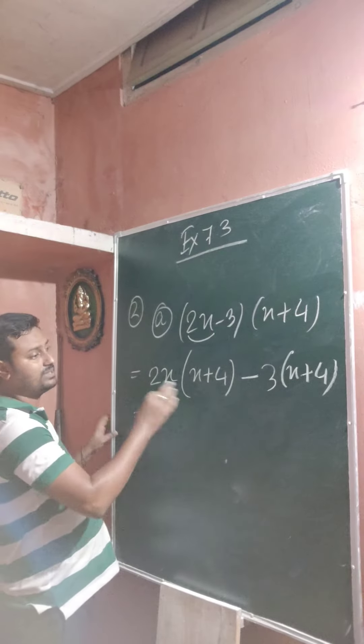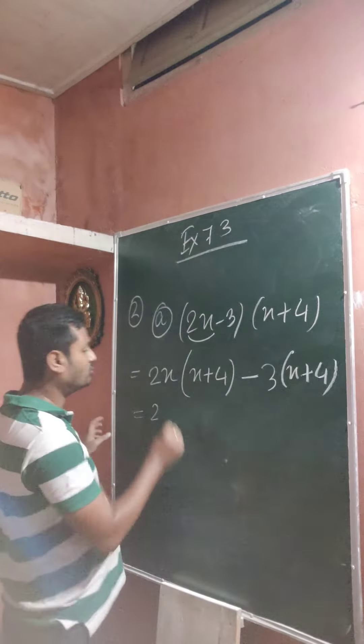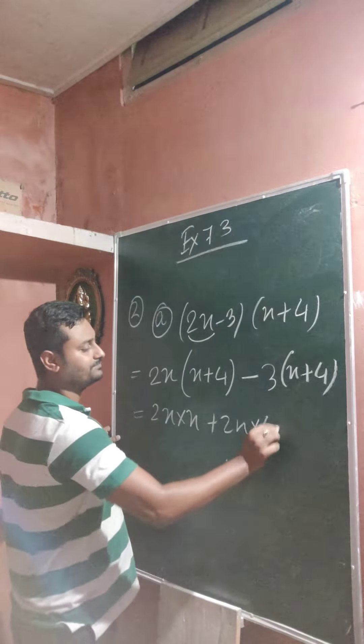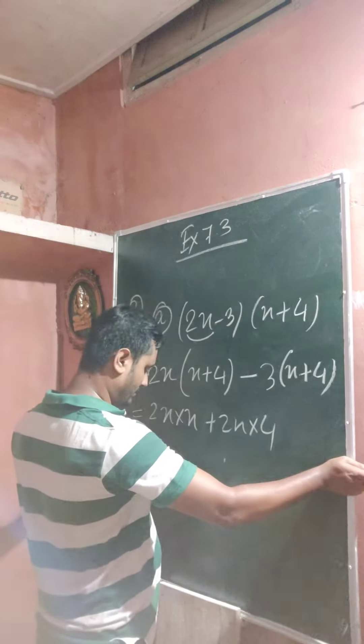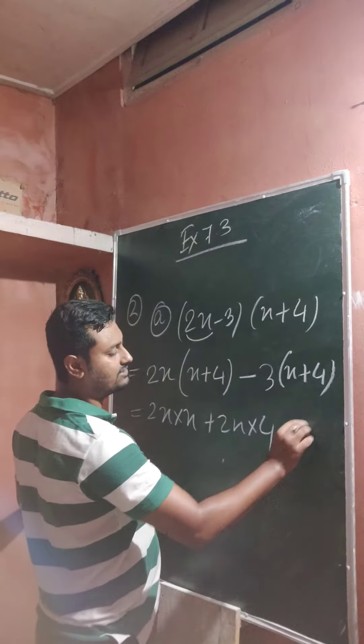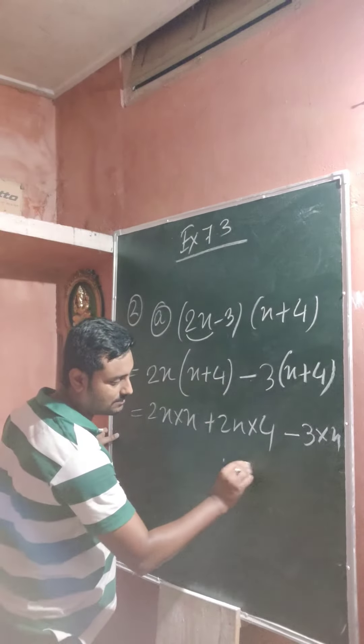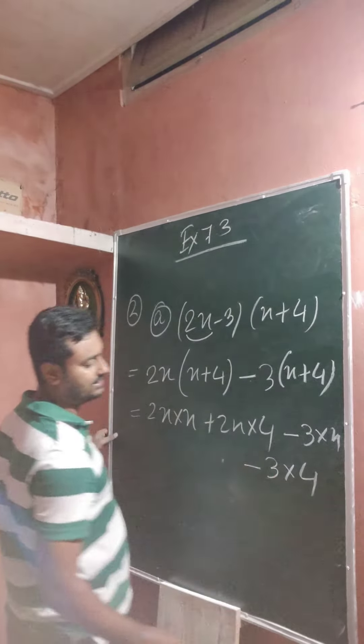So now this one becomes the same. Like question number 1. So 2x into x, plus 2x into 4. So look at this one. Minus 3 into x. Again this one minus into plus becomes minus. So minus 3 into 4. So like this.